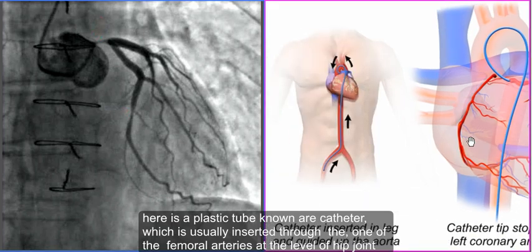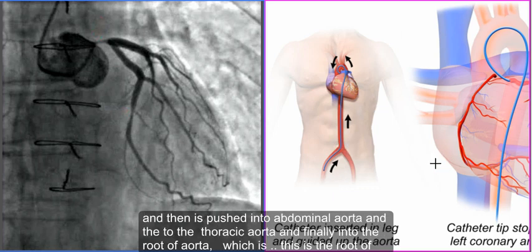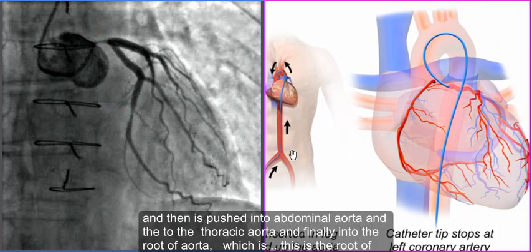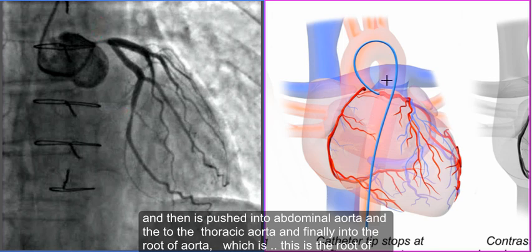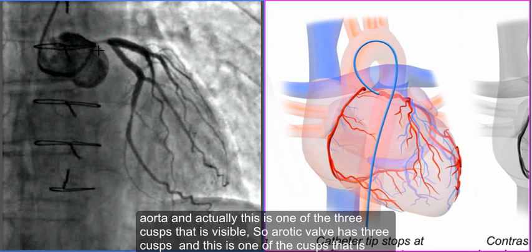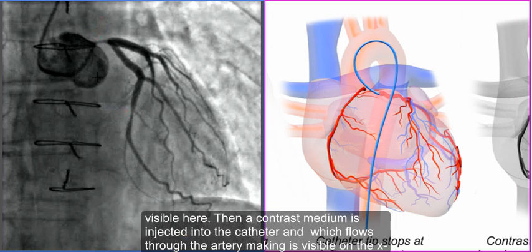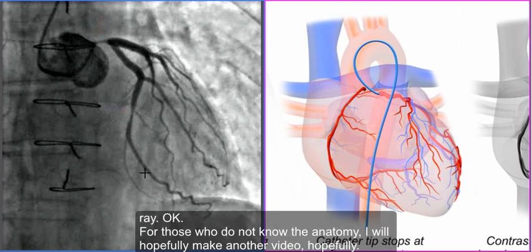What you see here is a plastic tube known as a catheter, which is usually inserted through one of the femoral arteries at the level of the hip joint. It is then pushed into the abdominal aorta, then to the thoracic aorta, and finally into the root of the aorta — which is this structure here. This is one of the three cusps of the aortic valve that is visible here. A contrast medium is then injected into the catheter, which flows through the artery making it visible on the x-ray.